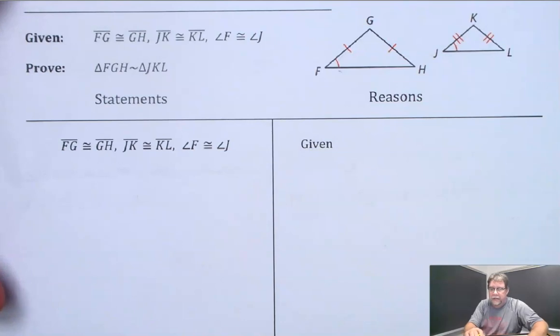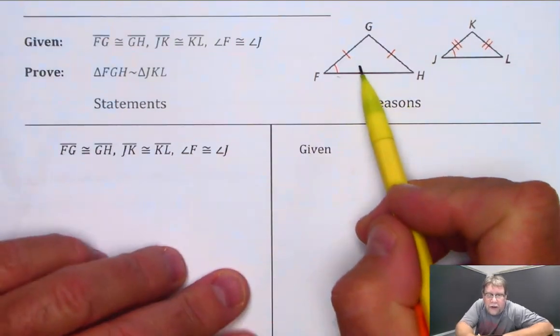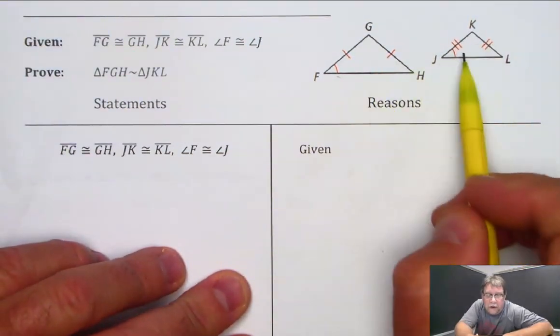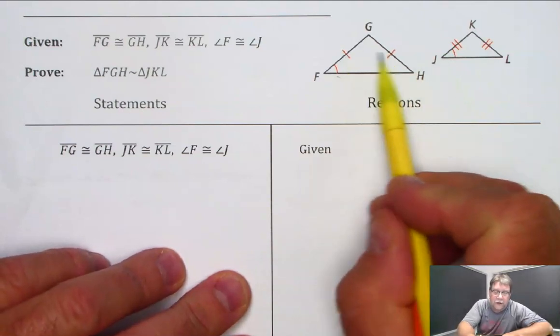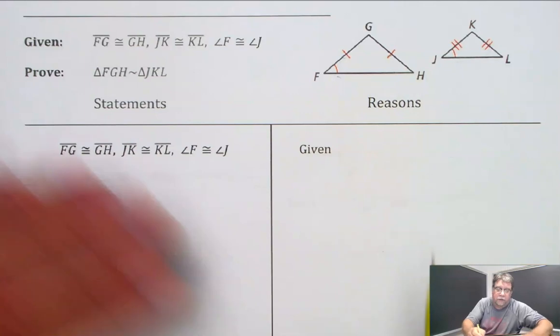All right, so now I want to say that these two triangles are isosceles. Because the two legs here are congruent, the base angles will be congruent.